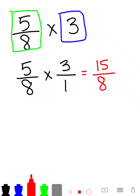So 15 over 8 is what we call an improper fraction. And we call that an improper fraction because the number on top is larger than the number on the bottom. So this 15 is bigger than this 8. So we need to fix that.